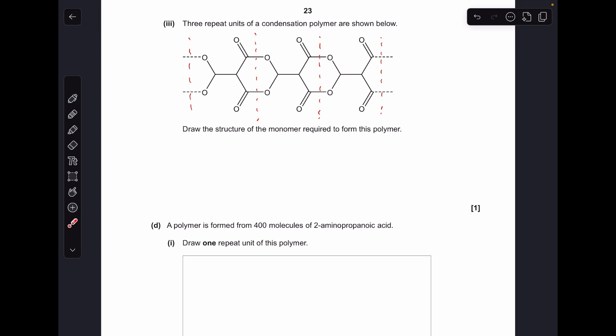Then moving on to the next part, we've got these three repeat units of this condensation polymer. The red dotted lines are just showing where the repeat units start and finish. So what could the monomer have been? We literally just need alcohol groups here and here, and carboxylic acid groups here and here.